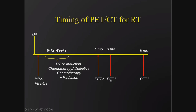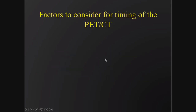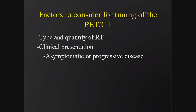Typically the first follow-up PET scan is done around three months. There are pitfalls to scanning at one month: you'll see a lot of inflammation from the radiation treatment and potentially incomplete tumor killing, leading to both false negatives and false positives. Factors to consider for PET CT timing include the type and quantity of radiation therapy — daily treatment over a month versus more fractionated stereotactic approaches with higher doses over approximately four fractions.